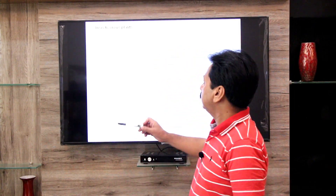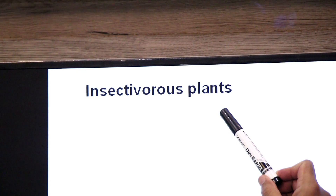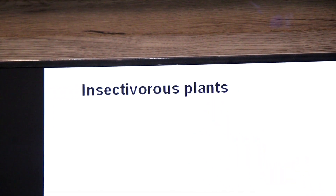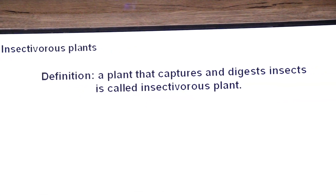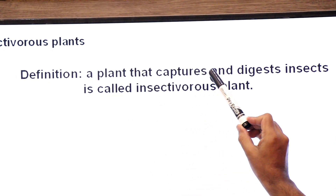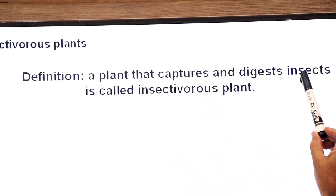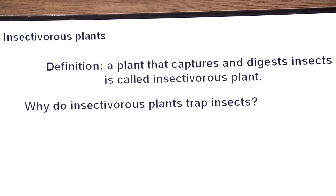Assalamu alaikum, namaste, hello dear students. We are discussing heterotrophic nutrition in plants. Today we are going to discuss insectivorous plants — the plants that trap and eat insects. Definition: a plant that captures and digests insects is called an insectivorous plant.